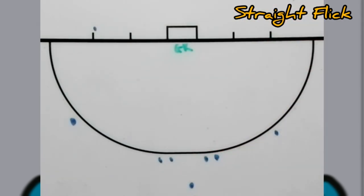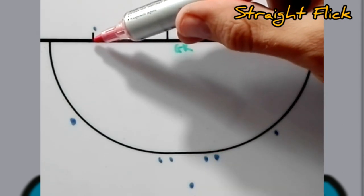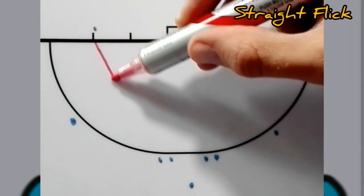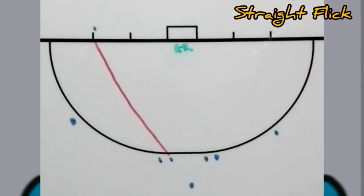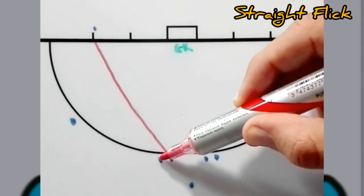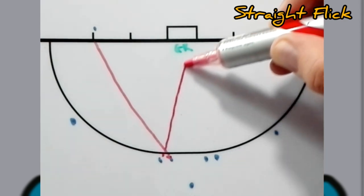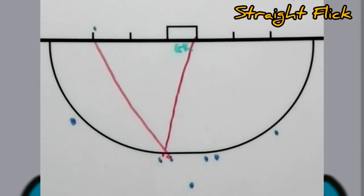For variation number one, the injector is going to inject the ball from there to the pusher. The pusher is going to stop and then the drag flicker will pick it up and flick it towards the goal.